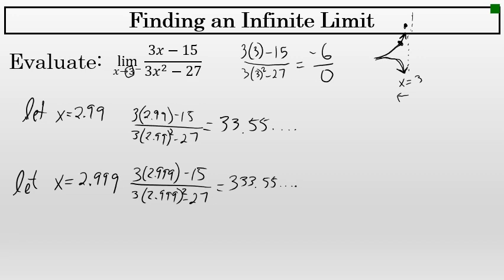There is a vertical asymptote at x equals 3, and as this function gets closer and closer to 3, it's increasing without bound. I could evaluate the expression when x equals 2.9999, but I would find that the graph is continuing to rise. So the limit as x approaches 3 from the left of 3x minus 15 over 3x squared minus 27 can be described as positive infinity.